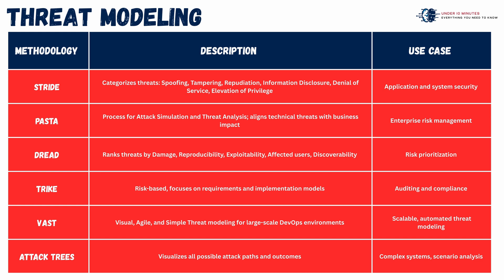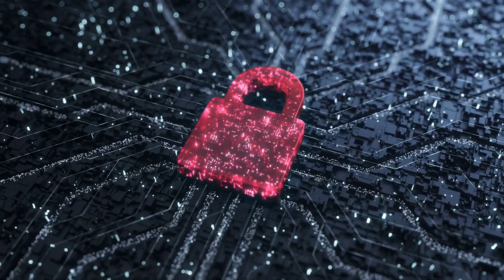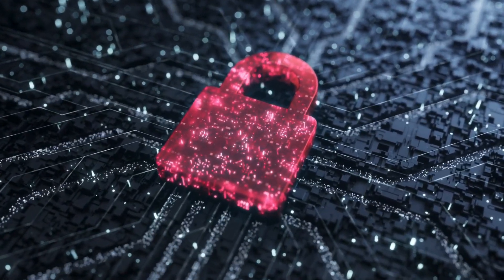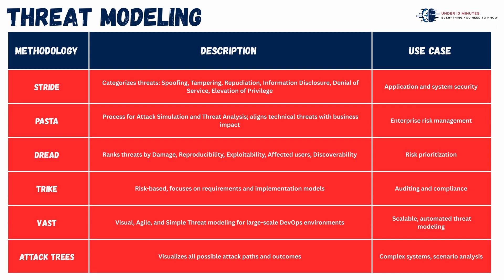Before you start building applications, it's smart to ask: what could go wrong? That's where threat modeling comes in. Threat modeling is a proactive strategy that helps development teams identify and fix security vulnerabilities before they become serious issues. By anticipating how attackers might exploit weaknesses, teams can secure systems early in the design phase. The process involves identifying critical assets like data or user information, mapping how data flows through a system to uncover weak points, pinpointing possible threats, analyzing vulnerabilities, and assessing which risks are most likely and damaging. These insights guide the implementation of defenses that improve overall security.